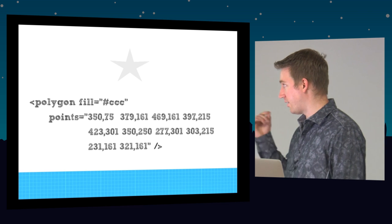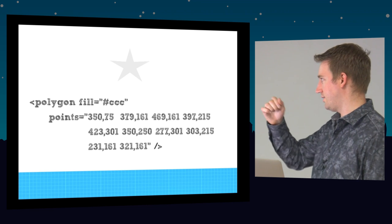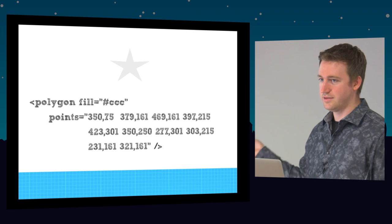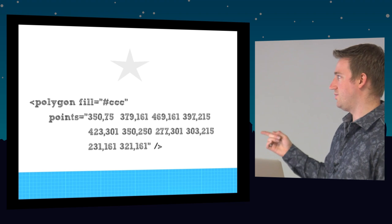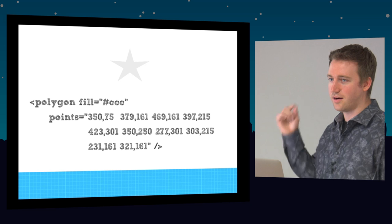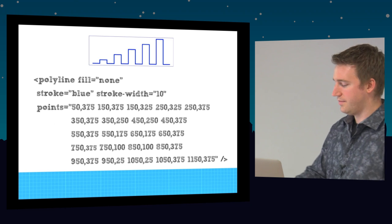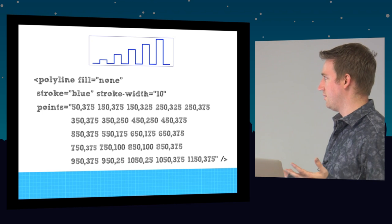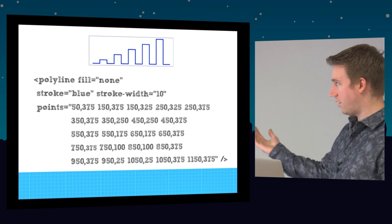The thing with the polygon is it's not ending back at 350, 75 explicitly — the polygon automatically draws a fill line between the last point and the first point, so that last line in the star is drawn automatically because it's a closed element. A polyline is not closed — you're doing the same thing except it just draws the line and is not filled. We still have stroke color and stroke width.